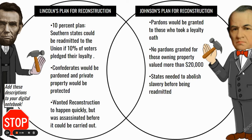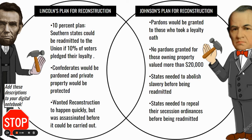States needed to abolish slavery before being readmitted — they had to completely implement the 13th Amendment. States would also need to repeal their secession ordinances before they could be readmitted to the Union. So they basically had to say they were taking it back in order to rejoin. Go ahead and add Johnson's plan for Reconstruction to your digital notebook.